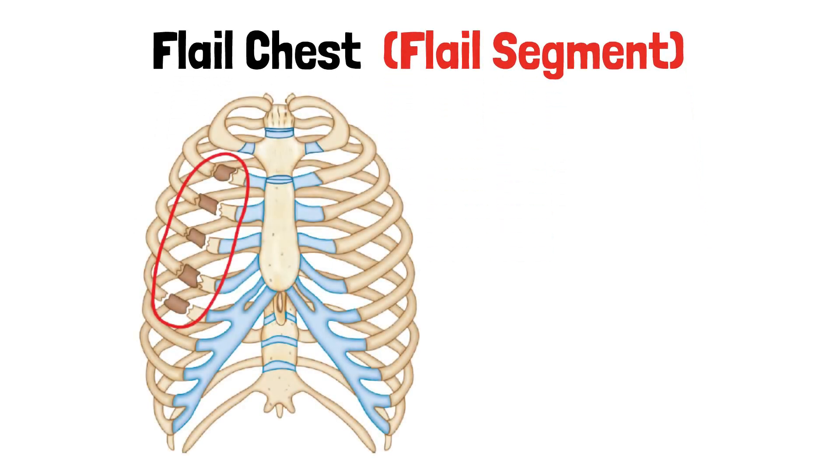A flail chest occurs when two or more ribs are fractured in two or more places, causing a segment of the chest wall to become detached from the rest of the thoracic cage.